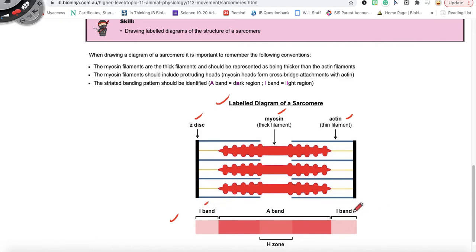So the I band which are the lighter regions of the thin filament on the sides. The A band which contains both the actin and the myosin as they slide past each other. And then within the A band the H zone when only the myosin appears when the muscle is not contracted.